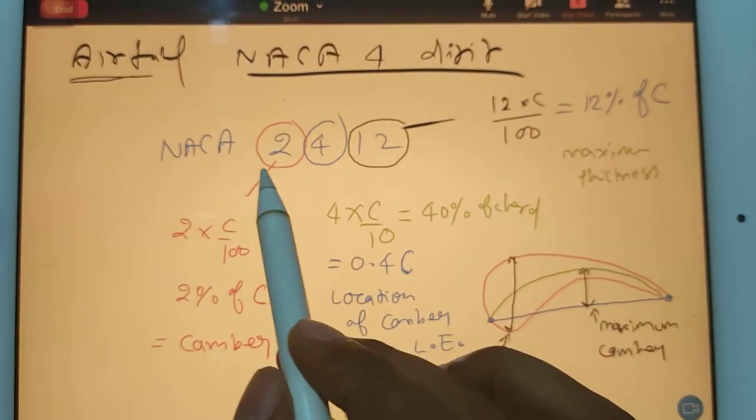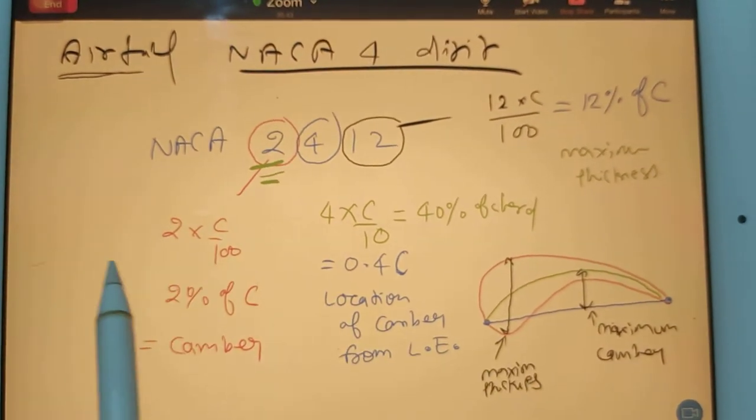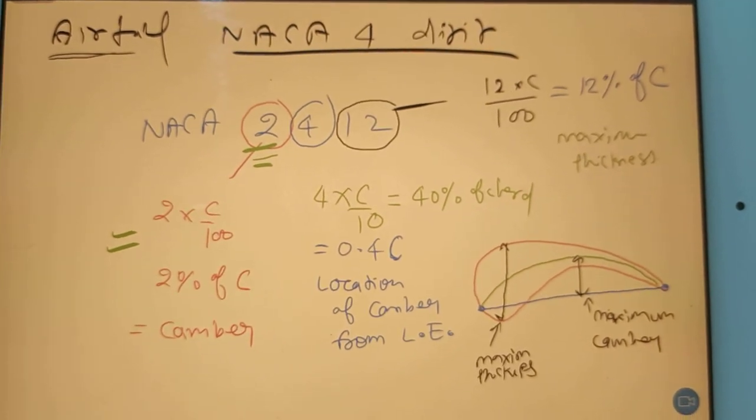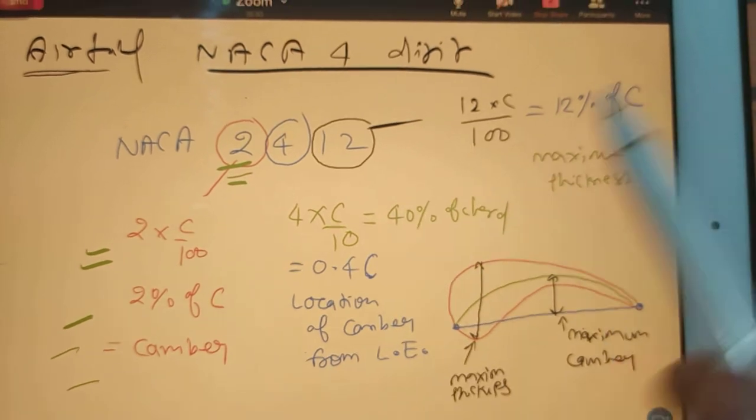So very clear, the first letter, just do 2C by 100. Correct, we got 2 percent of camber.